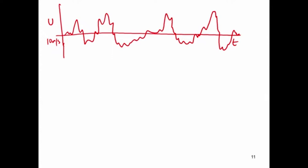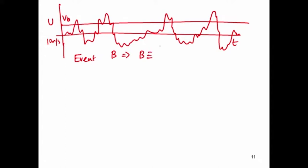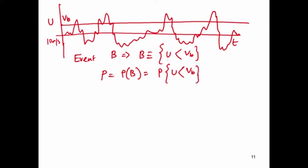We can define a new variable called the sample space variable, which we define as equal to VB. We then consider an event B which corresponds to U less than VB. All the possibilities of U being less than VB are captured in event B. We can then calculate the probability of event B: P(B) equals the probability of U being less than VB. V here is not a different velocity — it is just the generalized sample space variable of U.